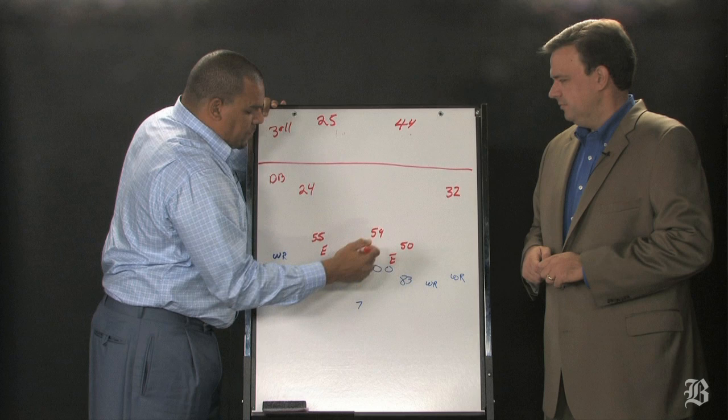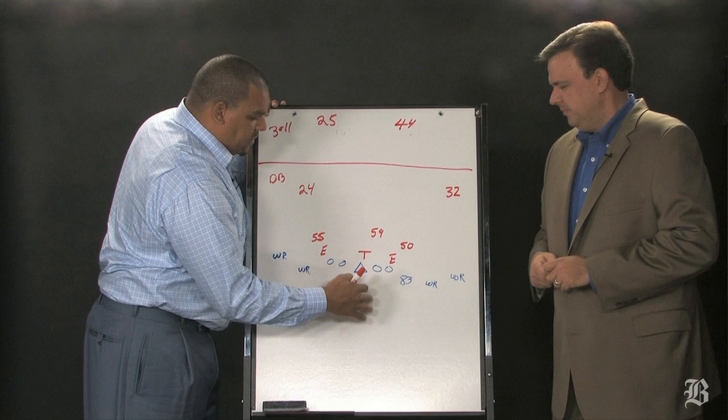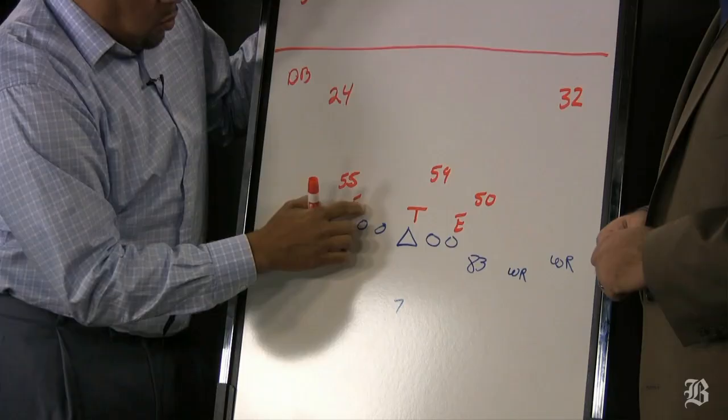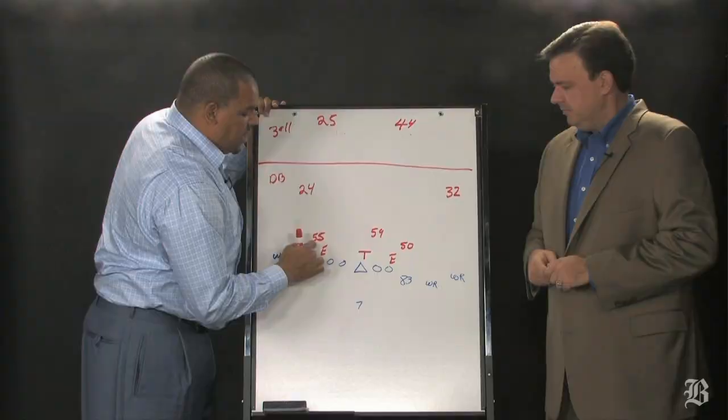Here, Pittsburgh's in an empty backfield. That means no running backs in the backfield. Now the Patriots have one, two, three, four, five, six potential rushes against Pittsburgh's five blockers.